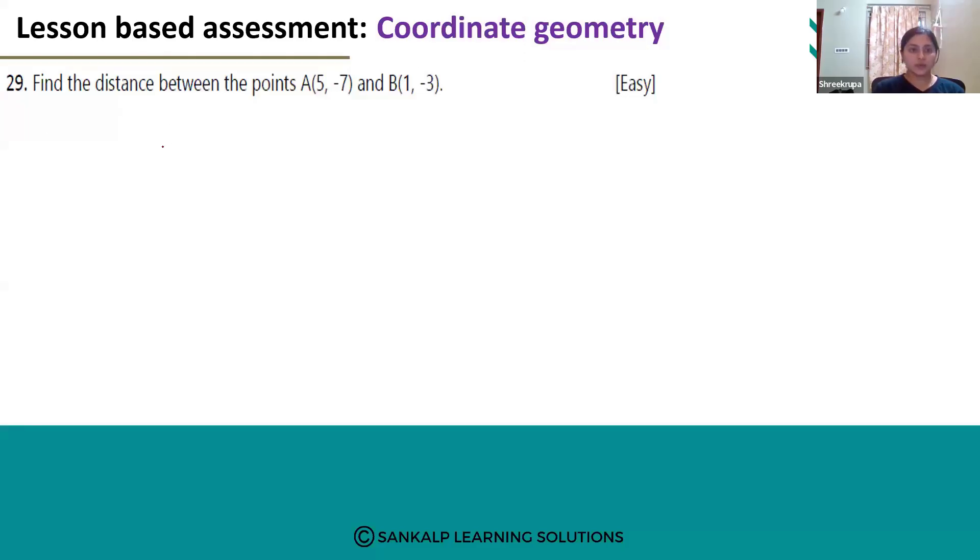So we use the formula d = √[(x₂-x₁)² + (y₂-y₁)²] to find out the distance between these two points.